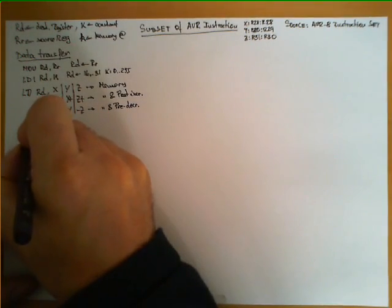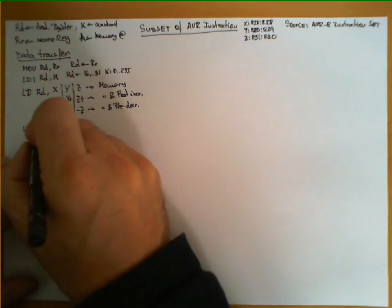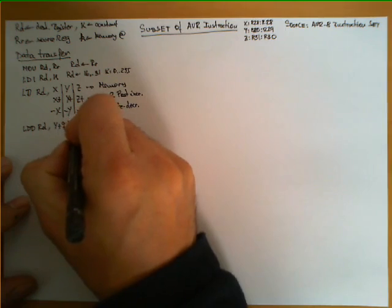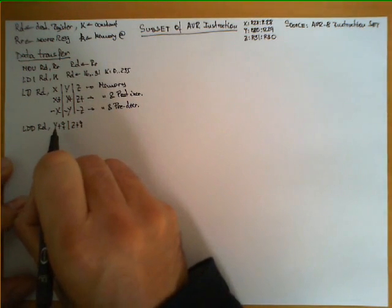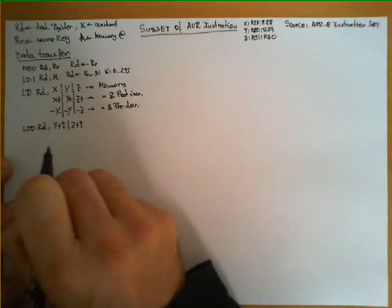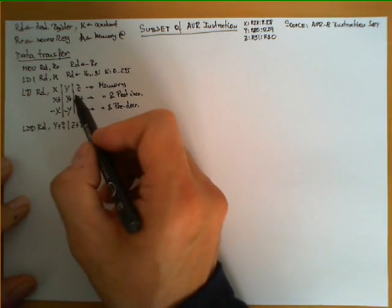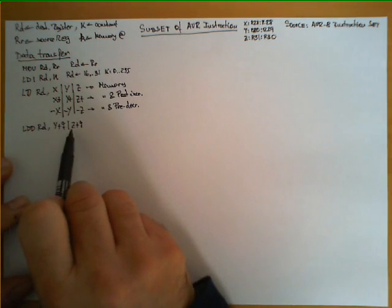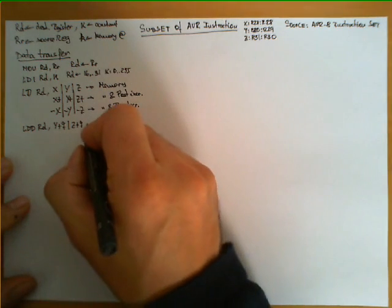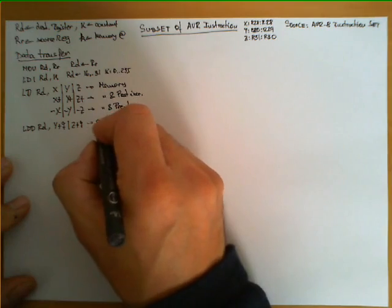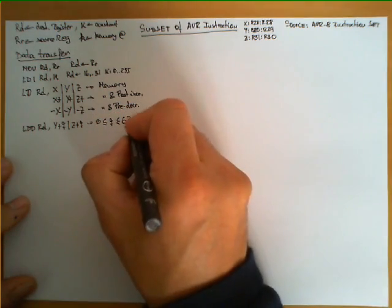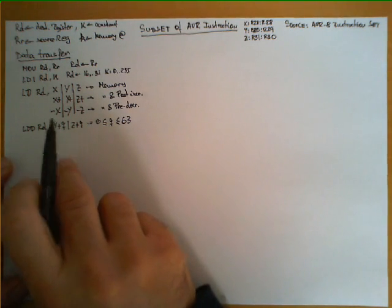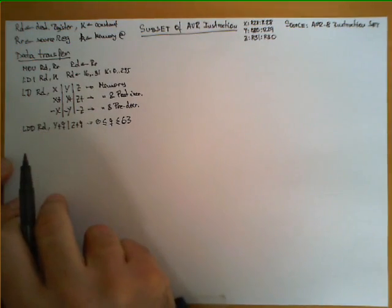Another interesting data transfer instruction is LDD, another memory variant. In this case, we can use Y+Q or Z+Q. Register X is not allowed with this type of instruction. It is similar to LD, but instead of going to the address in register Y or Z directly, it adds a constant offset Q, where Q must be between 0 and 63. This is a way of adding an offset to a memory address stored in a register.